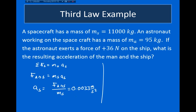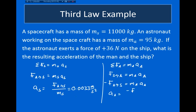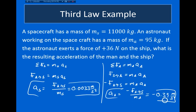What about the acceleration of the astronaut? The sum of the forces on the astronaut equals the mass of the astronaut times the acceleration of the astronaut. The force on the astronaut is the force that the ship exerts on the astronaut, which equals minus the force that the astronaut exerted on the ship. Solving for the acceleration of the astronaut: minus the force divided by the mass of the astronaut equals minus 0.39 meters per second squared. This minus sign indicates that the astronaut's acceleration is in the opposite direction as the ship's acceleration — the astronaut is pushed back in the opposite direction.